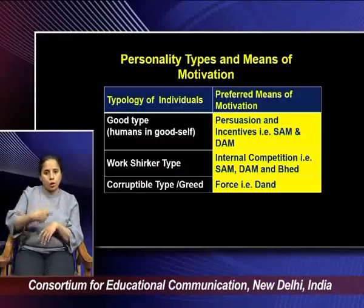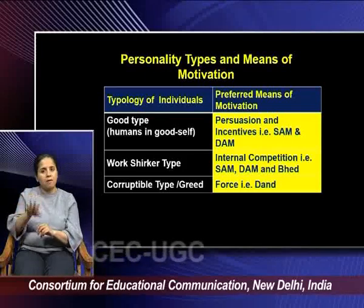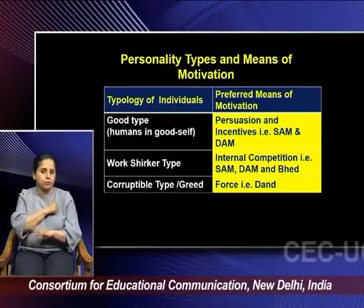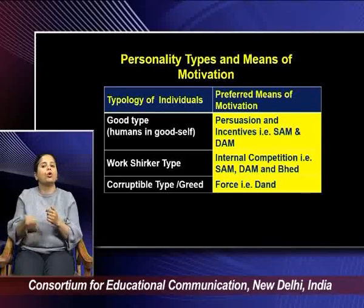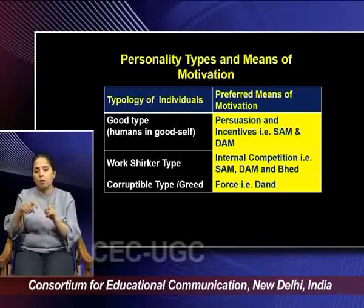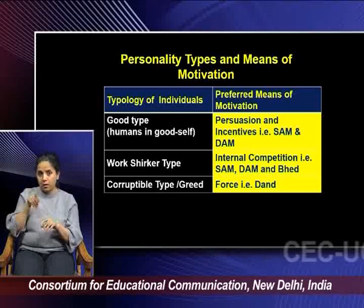Let us discuss the assumptions regarding human nature and which segment individuals are coming from. The first type is the good type — a self-motivated person with prominence of good traits and a positive attitude. Here comes the role of persuasion and incentive, that is Sam and Dam. Kautilya says that if a person is classified under the good type, you need to persuade them, offer some incentive, and they will stay motivated to work.